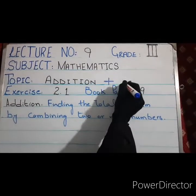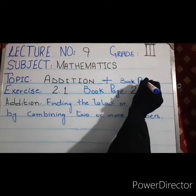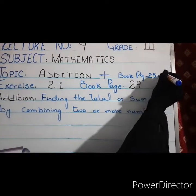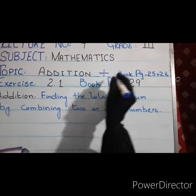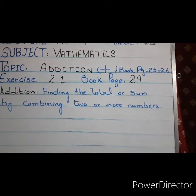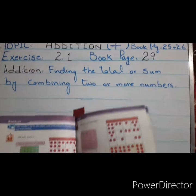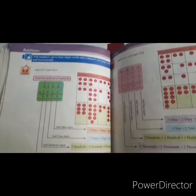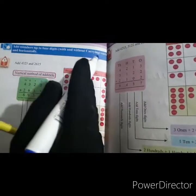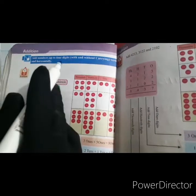Okay students, the book pages are 25 and 26. Clear? Okay. Open your book. Addition: adding numbers up to four digits with and without carrying, both vertically and horizontally.